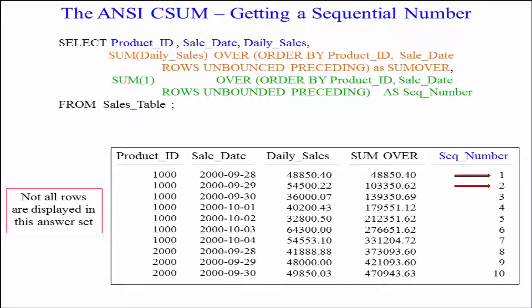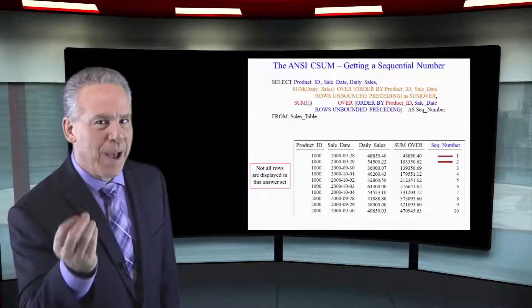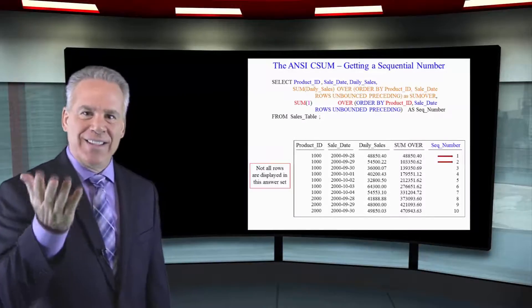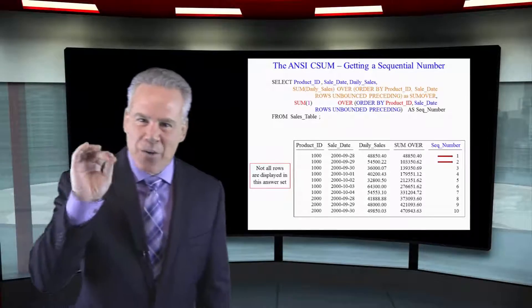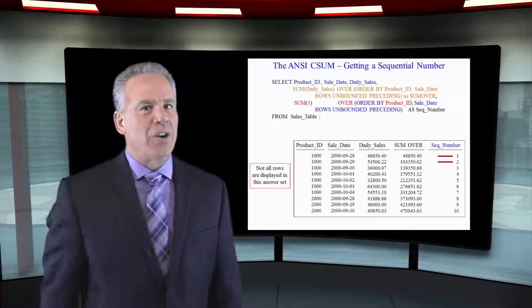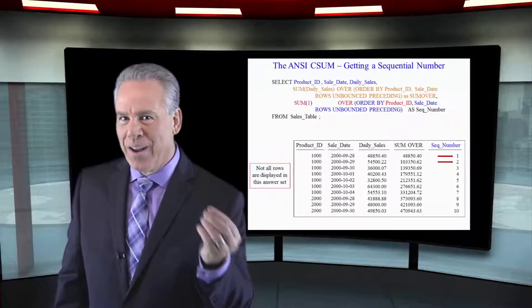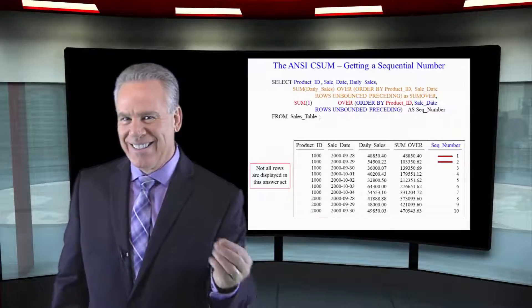We're going to do a SUM of the number one over ORDER BY product ID, sale date, ROWS UNBOUNDED PRECEDING, and this will give us the same exact query we saw earlier when we had our two ordered analytics.